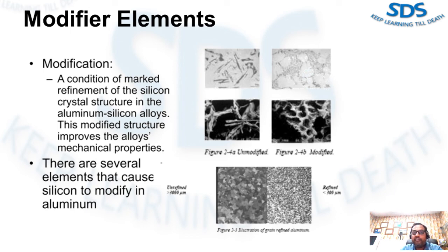Phosphorus is used to refine hyper-eutectic alloys — those containing silicon in excess of 12.6%. Phosphorus combines with aluminum to form AlP, which nucleates primary silicon particles. Depending on the casting size and application, phosphorus refinement may or may not be necessary for 390 alloy being die cast. The topic should be reviewed with the die caster's metal supplier to determine if production requires a phosphorus addition.